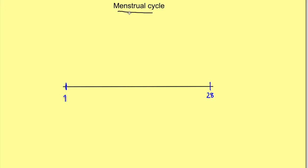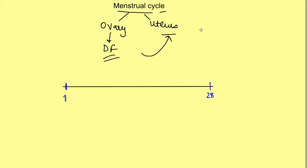The menstrual cycle refers to the cyclical changes which occur in the ovary and uterus every month in a repeatable manner. It causes the development of follicles and prepares the uterus for implantation if there is fertilization of the released ovum. So follicular development causing the release of ovum and the uterine changes for receiving the fertilized ovum are both interlinked.